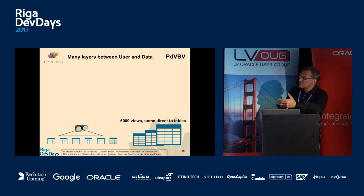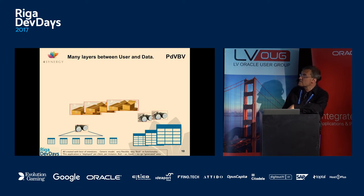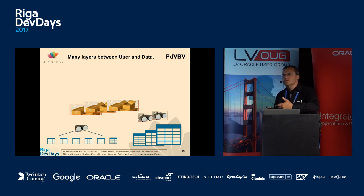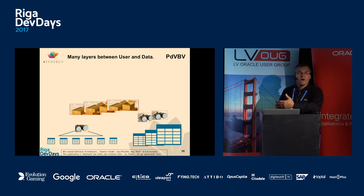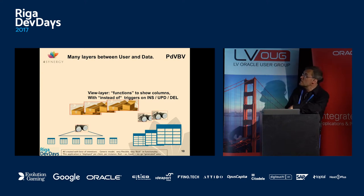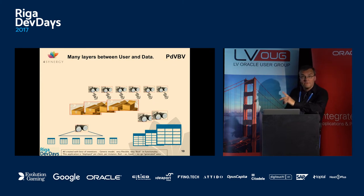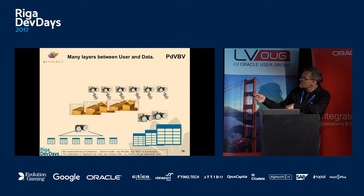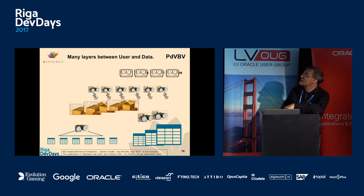Let me explain the layers. This slide only shows the database — there's application logic on top. I have a view with tables, and above that another view. I have about 2,000 other tables and views on top of those. The total number of objects was huge — 6,000 views and 2,000 tables. Above those views I have packages and stored procedures, and the packages call the views.